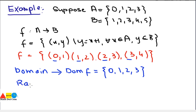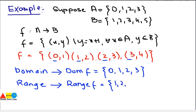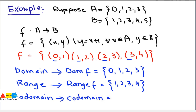Then we have the range. Range is basically the second elements of the ordered pairs in the function. So range of F is equal to {1, 2, 3, 4}. Now, co-domain. Co-domain is basically all elements of set B. So co-domain equals {1, 2, 3, 4, 5}.